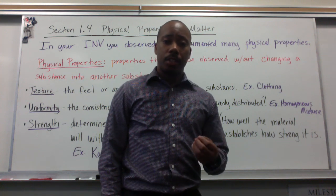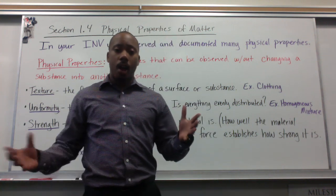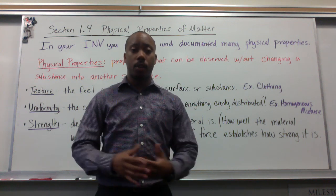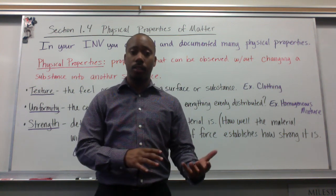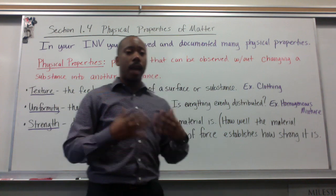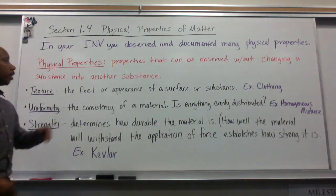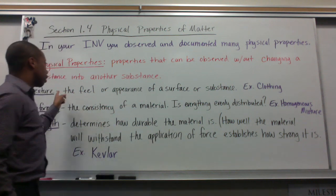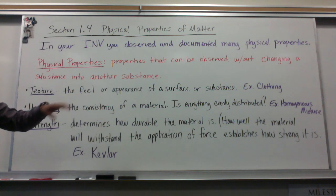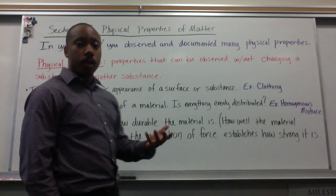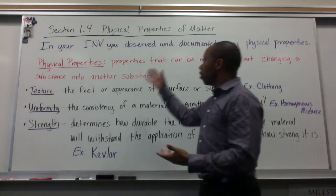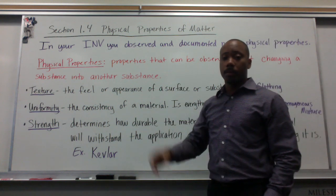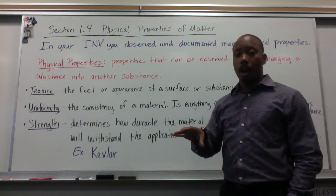In class, we looked at in our investigation Play-Doh and how it was combined with other substances and how those properties of the Play-Doh might have changed or might not have changed. Now let's look at what a physical property actually is. A physical property is a property that can be observed without changing a substance into another substance. The substance stays the same, but something changes that can be observed about it, but you're not actually changing what the substance is at the compositional level.